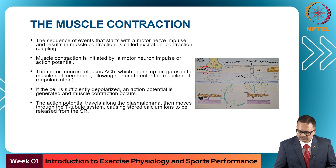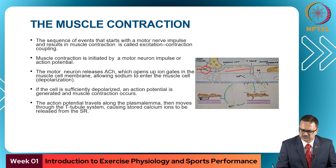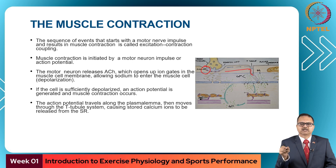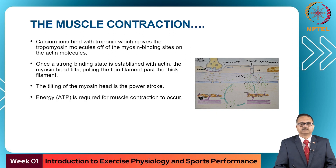The action potential travels along the sarcolemma, enters the T-tubules, and reaches the sarcoplasmic reticulum. When the action potential hits the sarcoplasmic reticulum, stored calcium ions are released. Calcium ions bind with troponin, which moves the tropomyosin molecules off the myosin binding sites on the actin molecules.